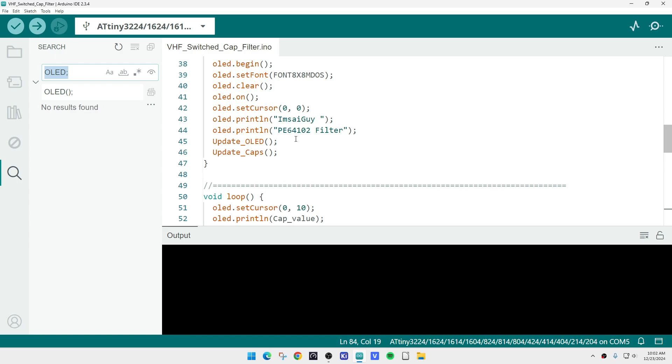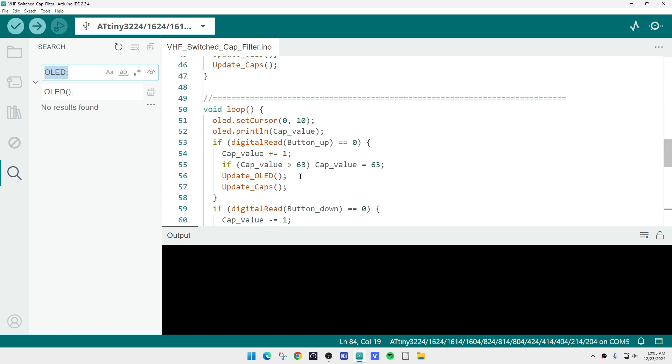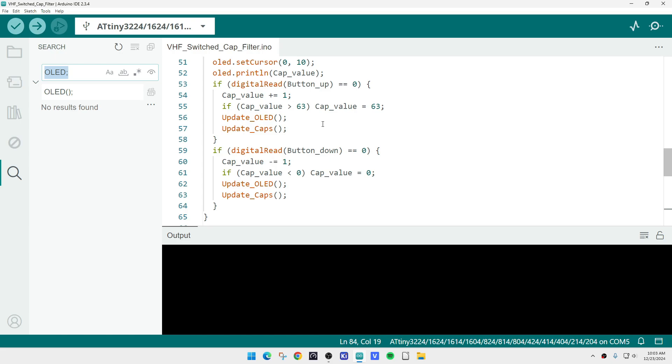I'm going to have two routines, one called update OLED, which basically takes the current value of the capacitor and displays that, and then update the caps, which takes that value also and writes it out to the actual digital caps. We're going to have a loop that runs here just waiting for a key press.